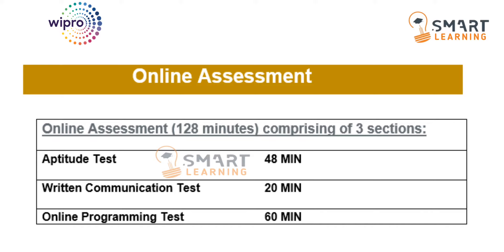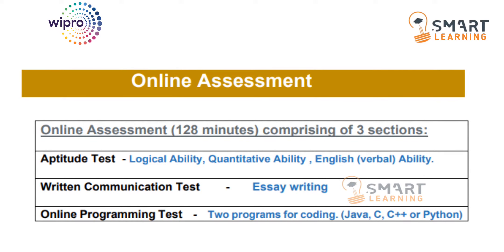For the aptitude test, you need to prepare logical ability, quantitative ability, and verbal ability. In the written communication test, there is an essay writing section — they will give you one question and you need to write an essay on it. In coding, you can code in Java, C, C++, or Python — you can choose any of these languages.